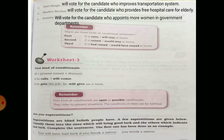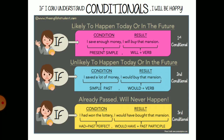Now remember, there are three types of conditionals. The exercise we have done just now represents the first kind of conditionals. The first kind of conditionals are open or possible conditionals, and they refer to present situations — the conditions in them can be fulfilled. For example: if I can understand conditionals, I will be very happy.